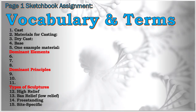The terms we're going to look at are cast, materials for casting, dry casting, base, and then you're going to list an example. There's going to be three dominant elements, three dominant principles. And we're going to review the types of sculptures: high relief, bas-relief, freestanding, and the new term site-specific.